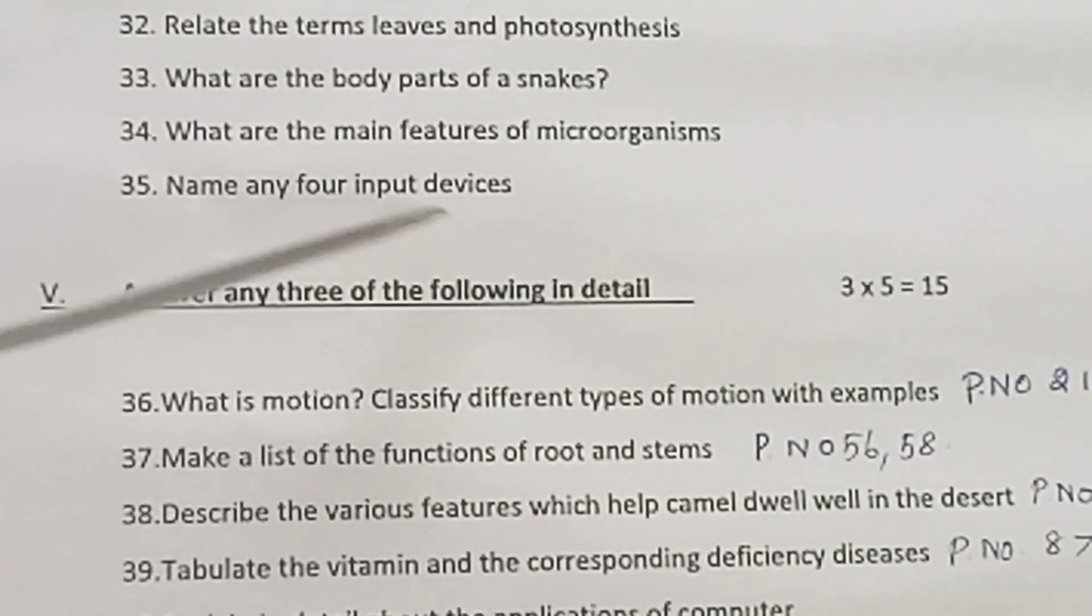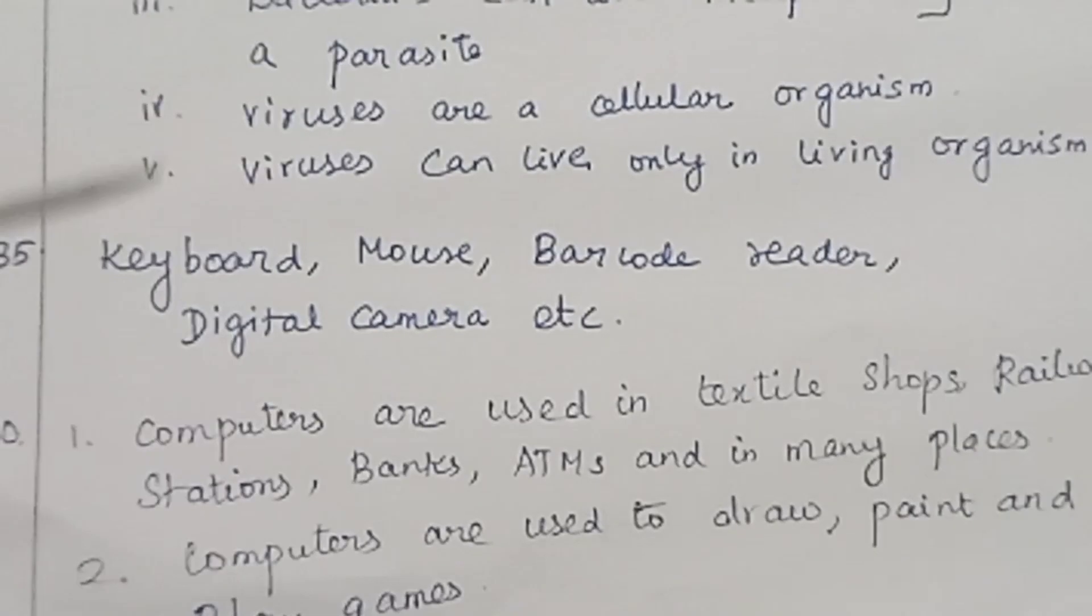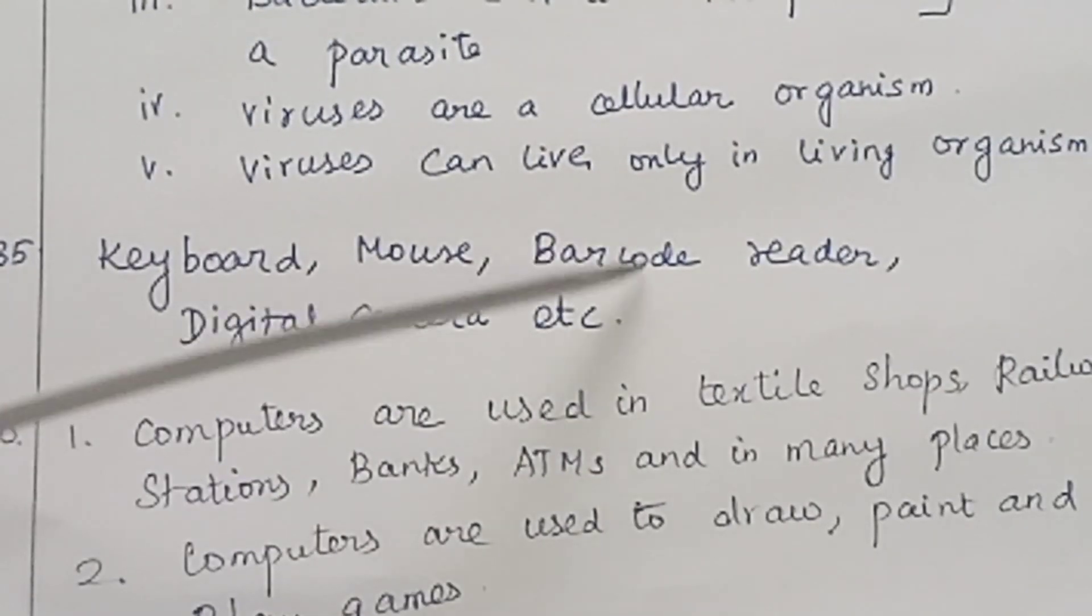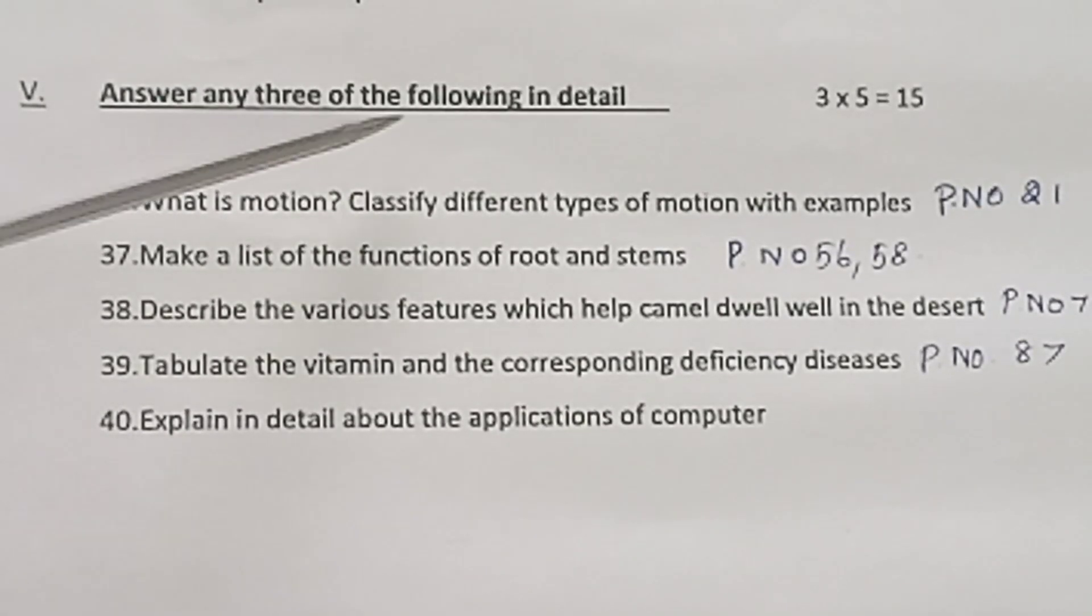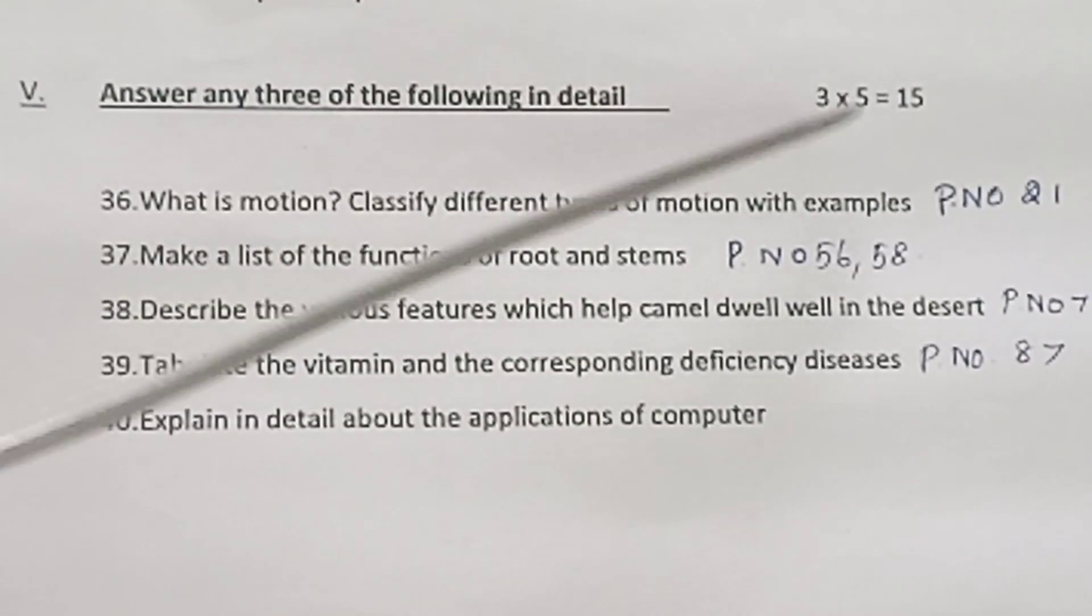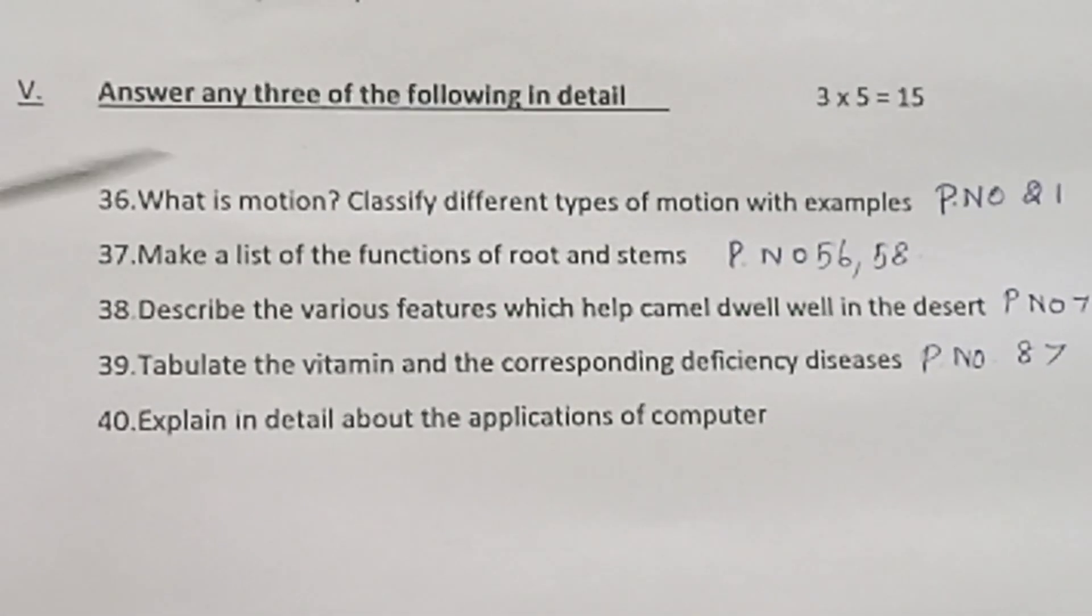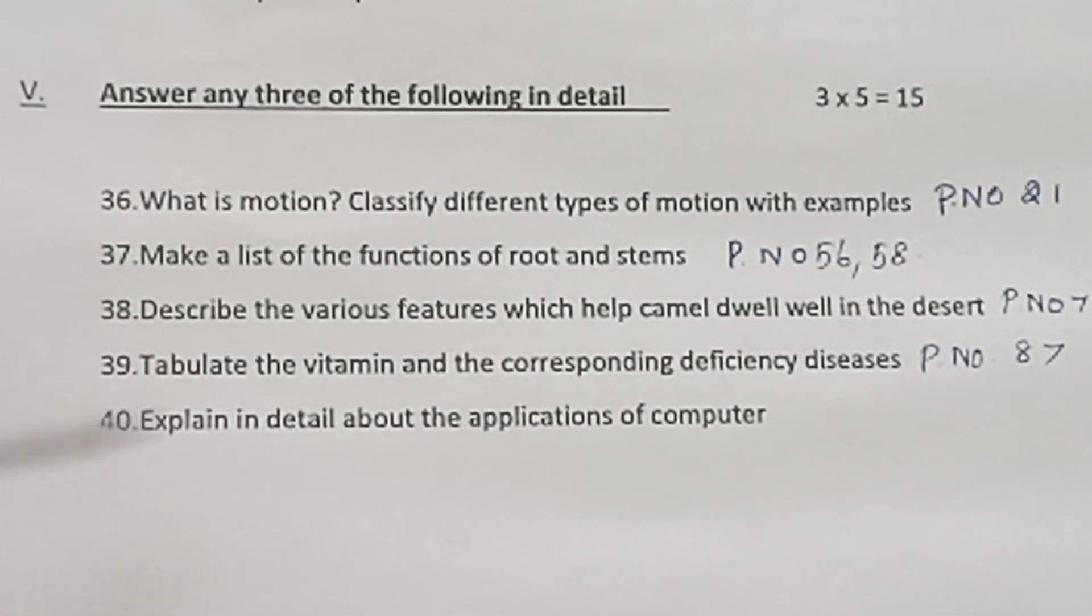Question 35. Name any four input devices: Keyboard, mouse, barcode reader, digital camera, etc. From the 5th, answer any 3 of the following in detail. 3 into 5 is equal to 15. It is 3 questions from 5 questions. Each 1 question carries 5 marks.